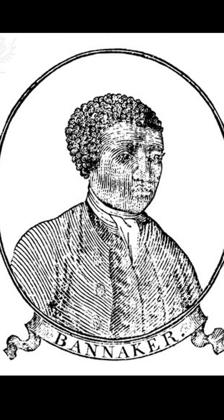This is Benjamin Banneker. Benjamin Banneker was a farmer, mathematician, astronomer, and surveyor. In 1791, Banneker helped plan the boundaries of the District of Columbia, otherwise known as Washington, D.C., the center of the United States government. Banneker also wrote a book of facts called An Almanac.